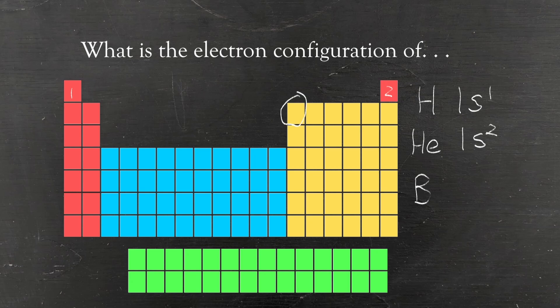Let's jump ahead to boron. We write in all the different types of subshells, putting in the right number of electrons until we reach boron. We still have to do that first row: 1s2, as we saw with helium. On the next row, we have two red elements — these are s orbitals on the second row — so we write 2s2. Finally, we have one yellow element, which is a p orbital on the second row, so we write 2p1.